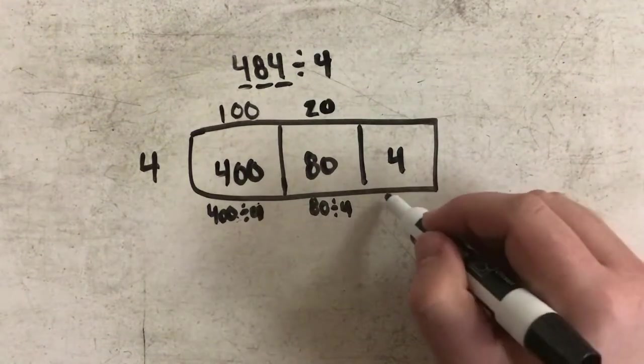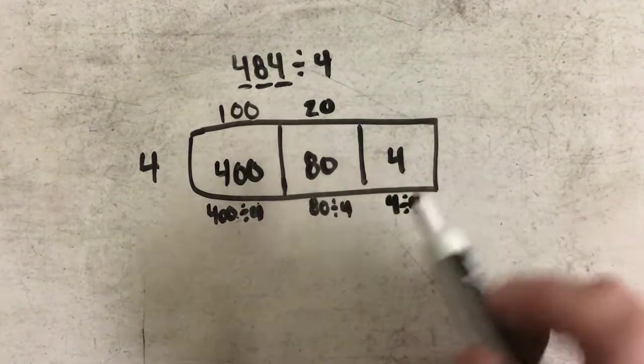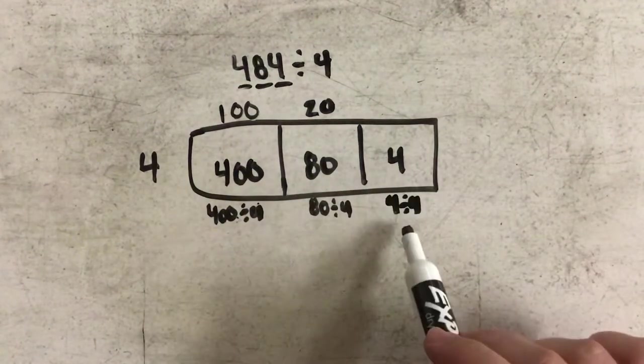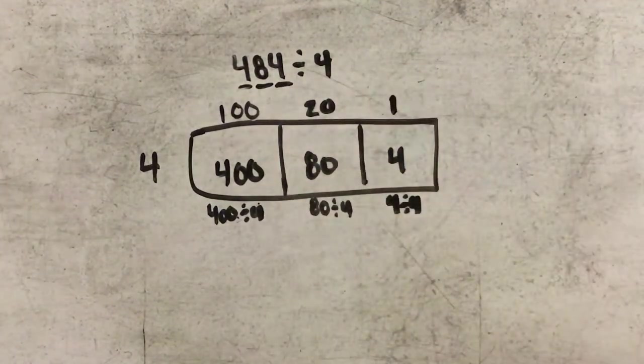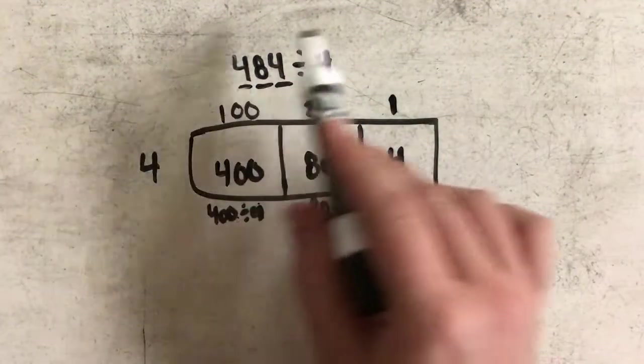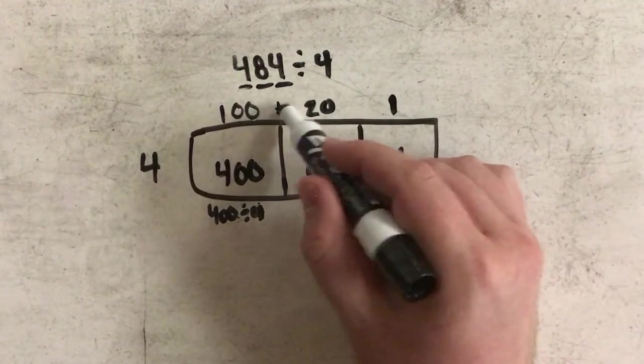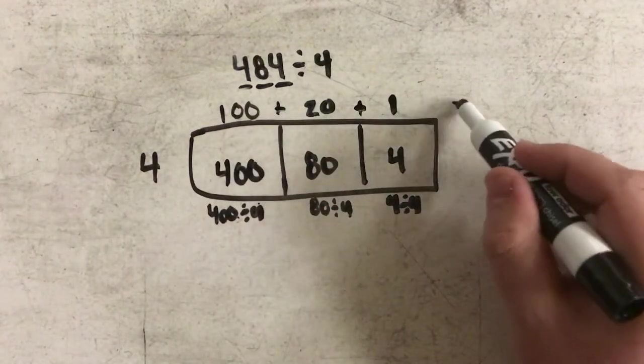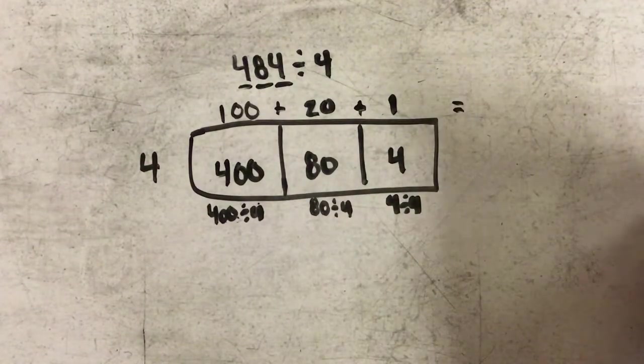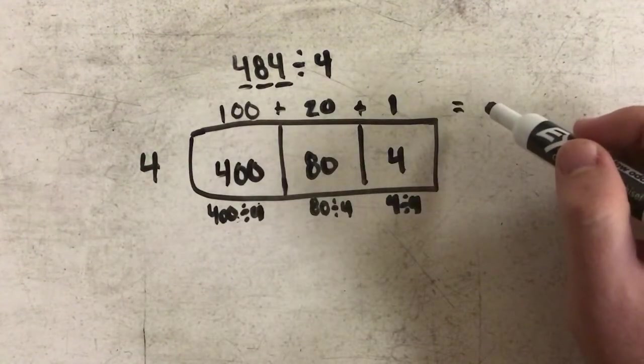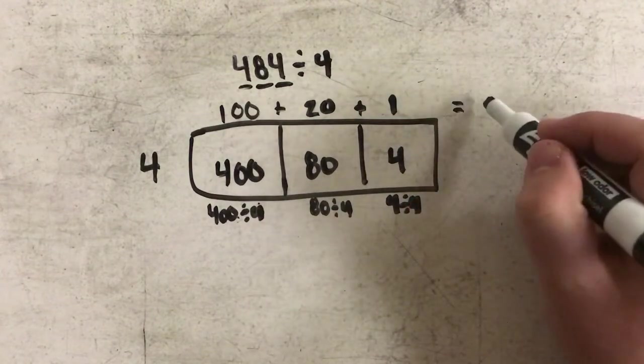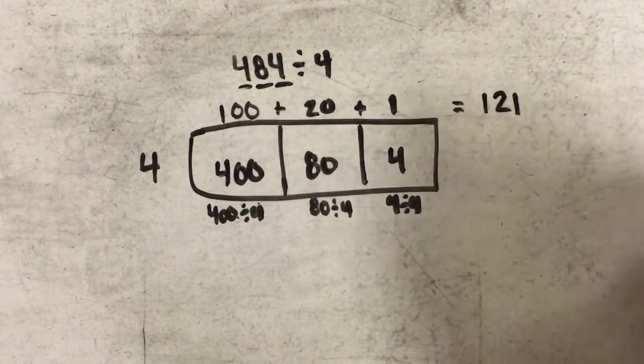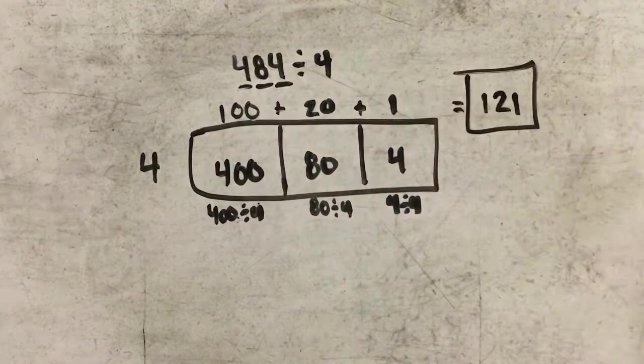And then finally, in my last box, I'm just going to divide 4 by 4. And 4 divided by 4 is simply 1. Now in order to get my answer, I have to add all of these partial quotients together to get my final answer. So 100 plus 20 is 120 plus 1 is 121. And that would be my answer.